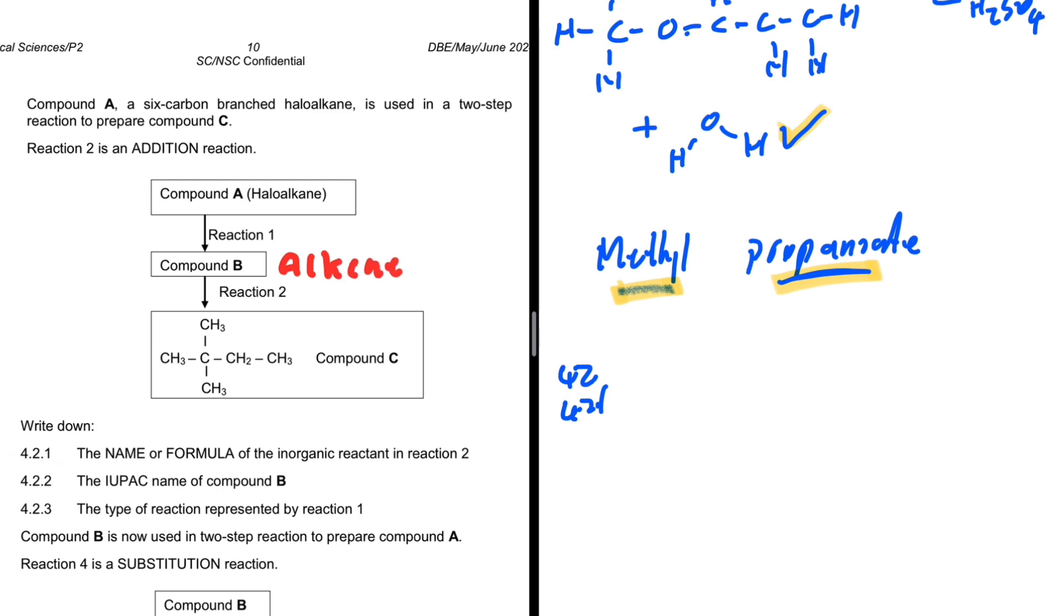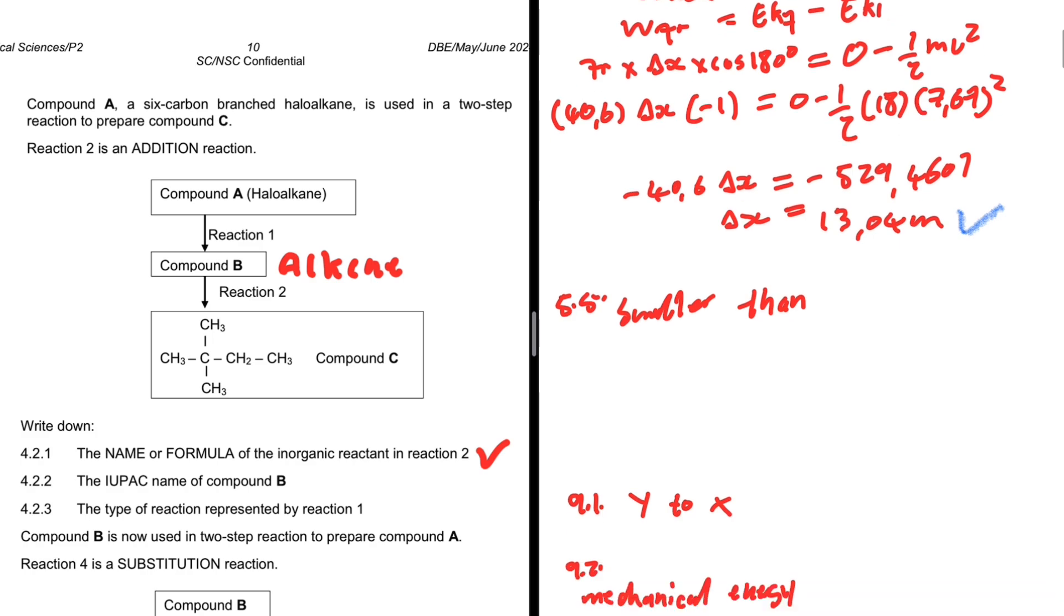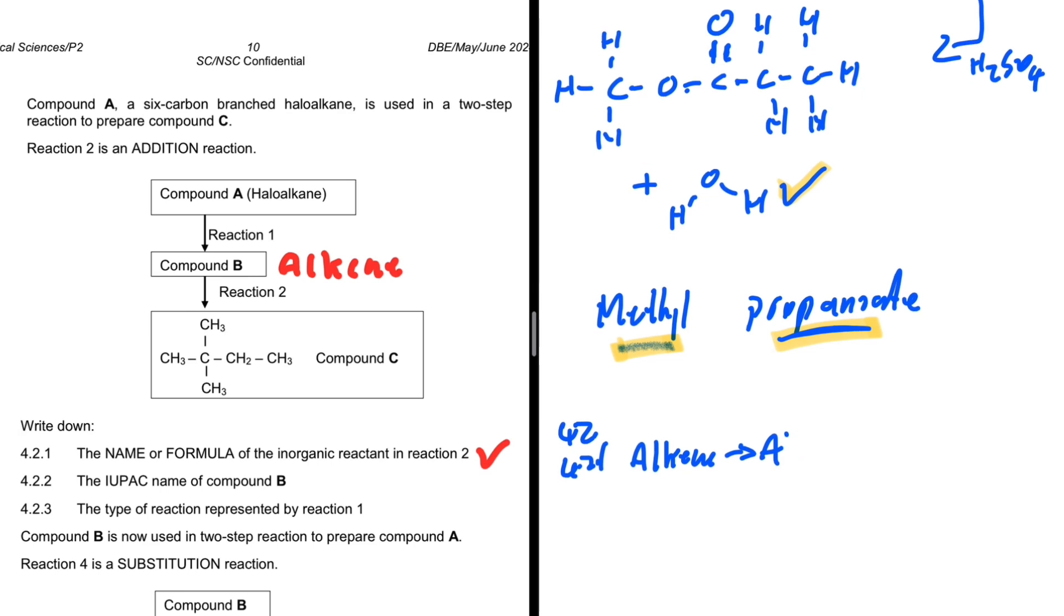4.2.1: The name or formula of the inorganic reactant needed in reaction 2. We have an alkene and our product is an alkane. I think you know it's quite easy to deduce here that we have a hydrogenation. What is the inorganic reactant needed for hydrogenation? Platinum, palladium, nickel—I wonder what else, but those are the ones I can recall from the top of my head.